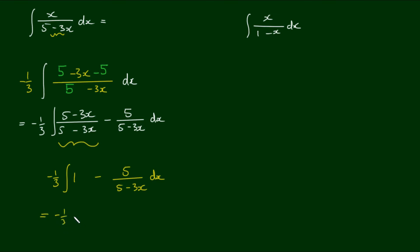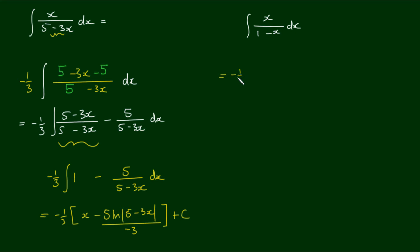We perform these integrals. We have negative one third outside of x minus 5 times the log of 5 minus 3x over negative 3. We close that bracket off and add a constant of integration since it is an indefinite integral. And if we take the negative one third into the brackets, we get negative one third of x minus 5 over 9 times the log of 5 minus 3x plus the constant c.